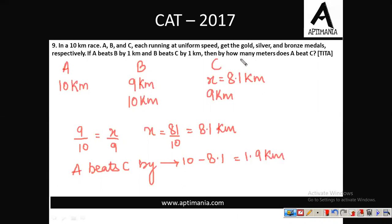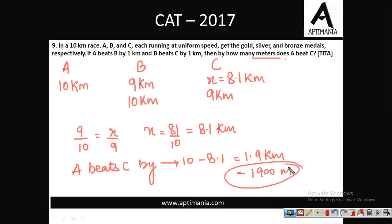The question asks for the value in meters. Multiplying 1.9 by 1000 we get 1900 meters. So the correct answer for question number 9 is 1900 meters.